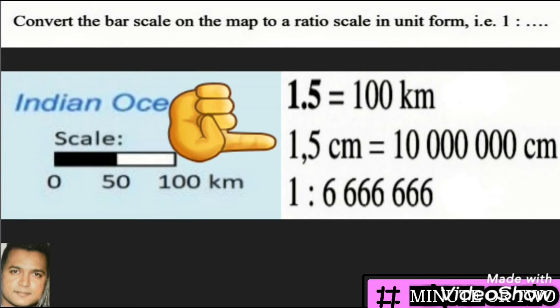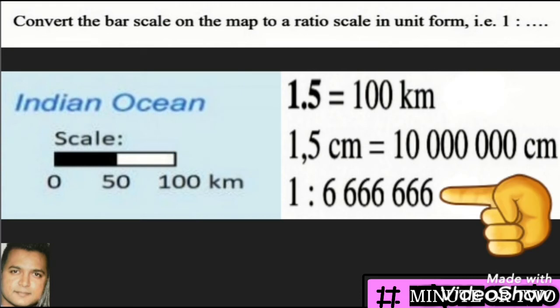To arrive at the final answer in the form 1 is to something, we divide both sides by 1.5. Dividing the left-hand side by 1.5 gives us 1, and dividing 10 million by 1.5 gives us 6,666,666. So the ratio scale is 1 : 6,666,666.